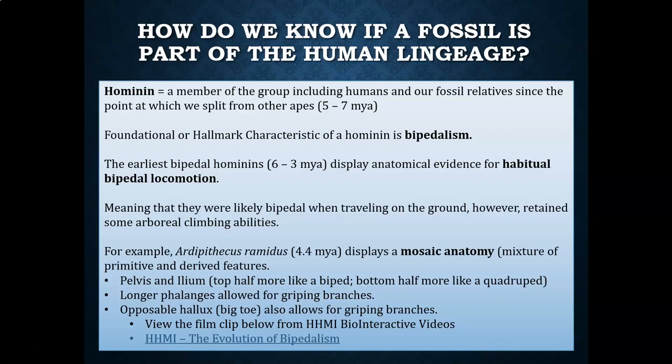Ardipithecus ramidus has a pelvic girdle and ilium where the top half of the pelvis looks much more like a biped — more rounded and bowl shaped — and the bottom half of the pelvis looks more like a quadruped. The phalanges, the finger bones and toe bones, are longer and slightly curved, which would have allowed for more effective gripping of branches. The hallux, or big toe, is also opposable, allowing for gripping of branches.